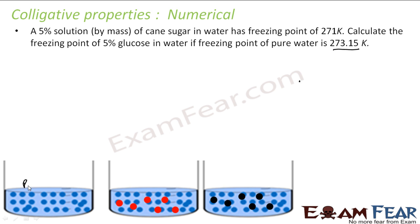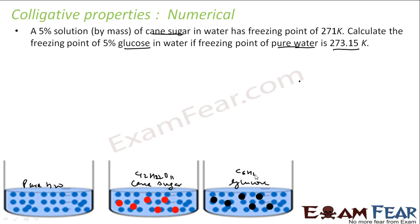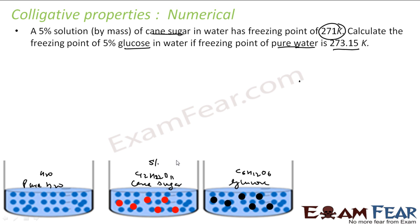So we have pure water, cane sugar with formula C12H22O11, and glucose C6H12O6. Water is H2O. The cane sugar solution is 5% by mass with freezing point 271K. We need to find the freezing point of 5% glucose by mass. Freezing point of pure water is given as 273.15 Kelvin.